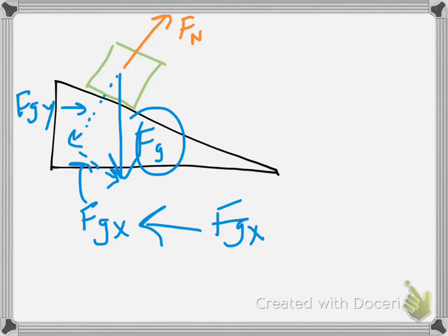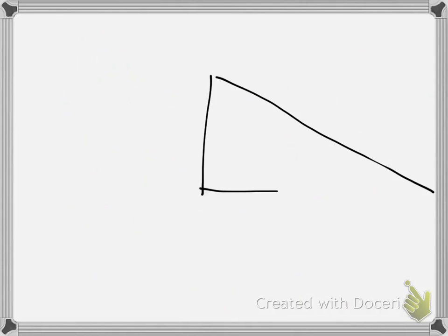Fgx equals Fg times sine of the angle, whatever that angle happens to be. Here's a scenario: we have a long ramp with a block sitting at the top, and another block dropped from the same height. Which one is going to hit the ground first, and why? I'll leave that as a question in the form at the bottom.